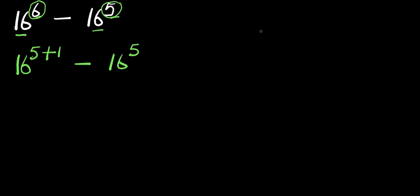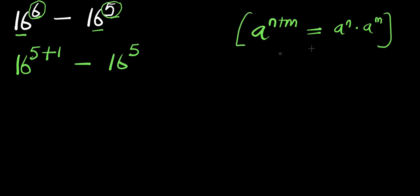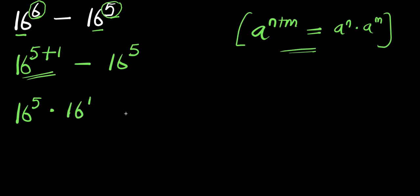Now, if you have a to the power of n plus m, this equals a to the power of n times a to the power of m. So, applying this identity right here, we are simply going to have 16 to the power of 5 times 16 to the power of 1, minus 16 to the power of 5.